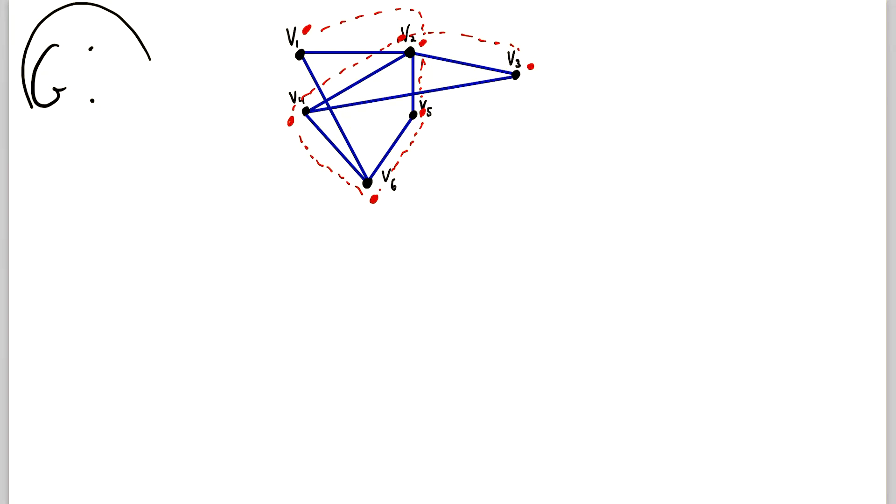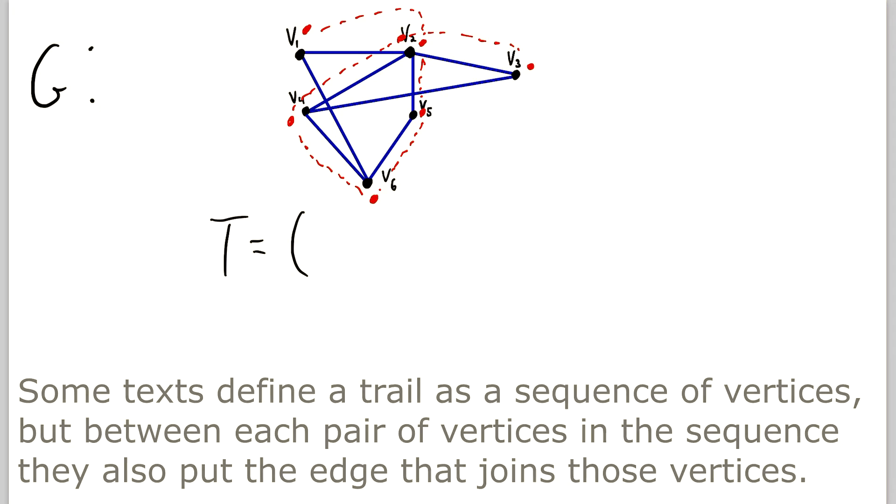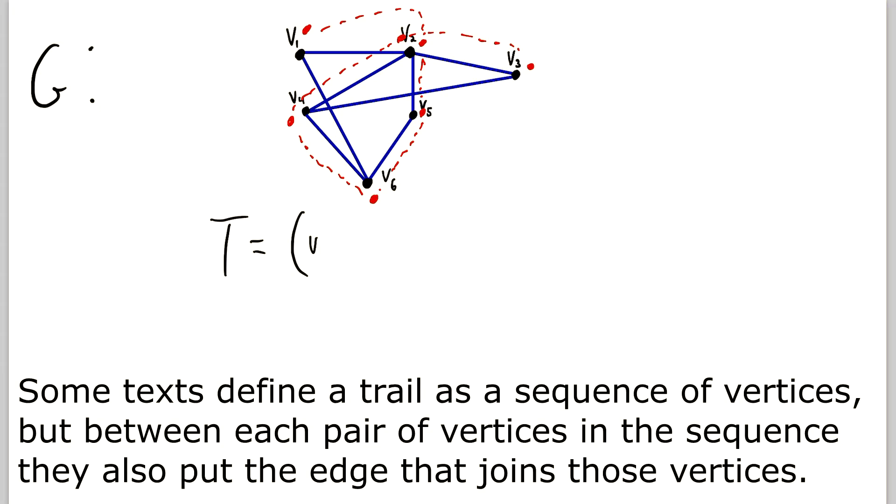Then what we have just described is a trail in the graph G, but what makes it a trail? Well, we'll call the trail T, and just like with walks, we can define it as a sequence of vertices in G.